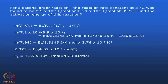Another example: for a second order reaction, the rate constant at 3°C was found to be 8.9×10⁻³ L·mol⁻¹ and 7.1×10⁻² L·mol⁻¹ at 35°C. Find the activation energy. Using ln(k2/k1) = (Ea/R)·(1/T1 − 1/T2) and plugging in the respective numbers, Ea comes out to be 45.9 kJ/mol.